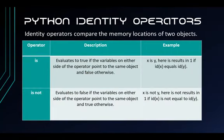Next are the identity operators, which compare the memory locations of two objects. There are two operators. The is operator evaluates to true if the variables on either side of the operator point to the same object, and false otherwise. The is not operator evaluates to false if the variables on either side of the operator point to the same object, and true otherwise.